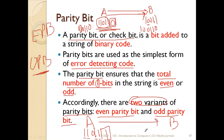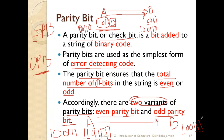Now again the same scenario: as the data travels to B, one of the ones gets changed. So B receives: 1, 0, 0, 1, 1, 1. B counts the ones: 1, 2, 3, 4. But how many ones should there be? An odd number of ones. Four is even, so B realizes that the number of ones has changed. B detects that there is an error in this data.